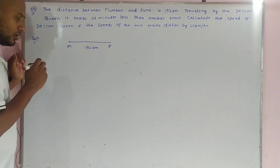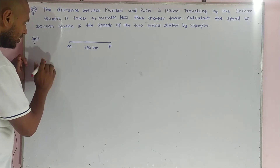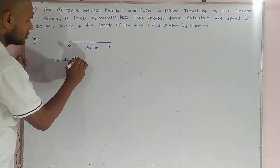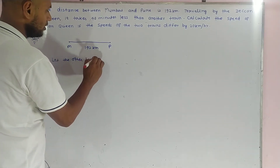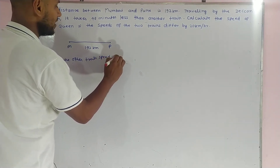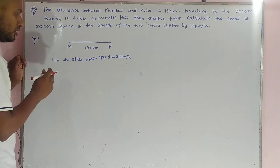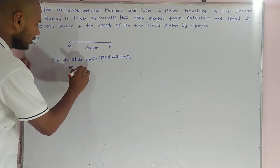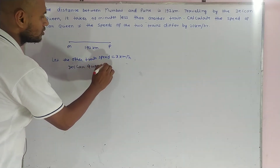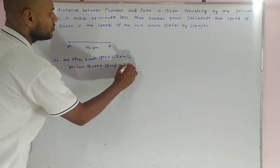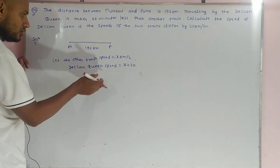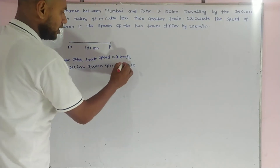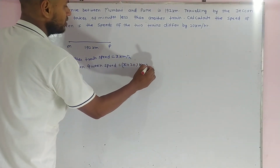If we assume the other train speed, let the other train speed be x kilometers per hour. So the Deccan Queen speed becomes x plus 20, because the difference between the two trains' speed is 20 kilometers per hour. So x plus 20 kilometers per hour is the Deccan Queen's speed.